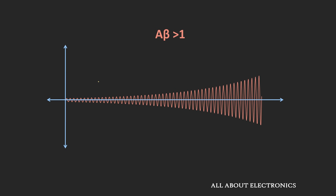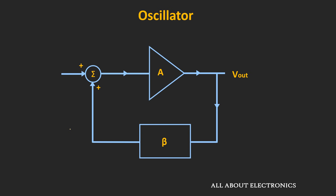Similarly, whenever Aβ is greater than 1, the oscillations in the circuit will build up. So in both cases — Aβ less than 1 or greater than 1 — we are not getting sustained oscillations. Sustained oscillations are only possible when Aβ equals 1. When Aβ equals 1, the feedback signal Vf will be the same as the input signal, provided the input signal and feedback signal have the same phase. In that case, we will get sustained oscillations at the output.